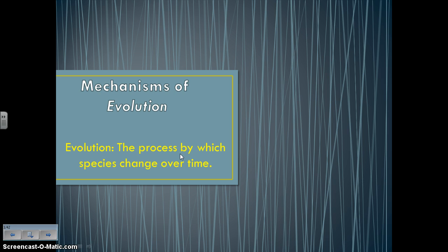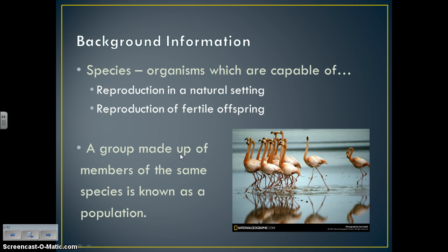Please make sure you're filling in your notes organizer as I go through the lecture video. Before we can talk about how a species can change or evolve, we need to talk about what a species is. A species are organisms which are capable of two things: reproduction in their natural setting and reproduction of fertile offspring, meaning they can produce offspring that can also have children.